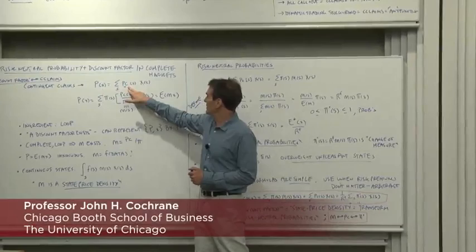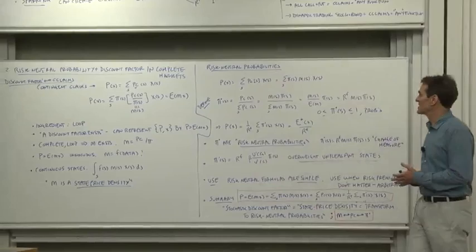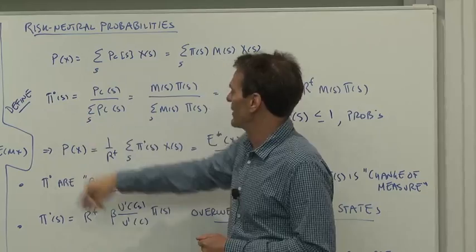Now, another way of representing the same ideas. We had price as a bundle of contingent claims. We had price as state price density or stochastic discount factor. Now I'm going to introduce risk neutral probabilities, which express the same ideas in a different way.